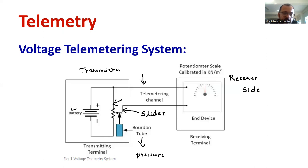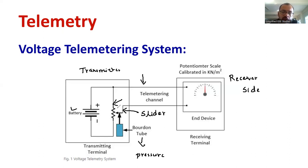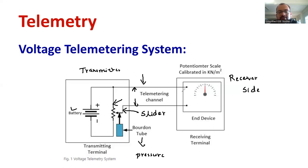With respect to the changes in the position of the slider, the lead is also getting varied, and therefore there is a variation in the voltage. That voltage variation will directly reach the receiving end side. The voltage variation happening at the transmitter side will directly reach the receiving end side.